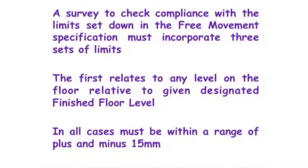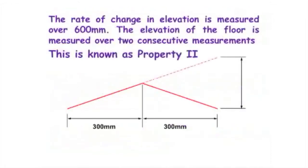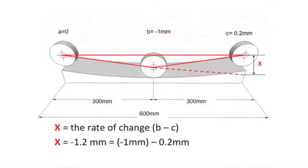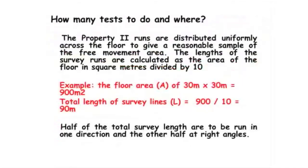To check compliance for free movement you have three things to consider: you need to be within plus and minus 15 millimeters of a datum, you need to follow the pattern that was part of the genesis of the narrow aisle, and under those circumstances you are picking up situations like that.